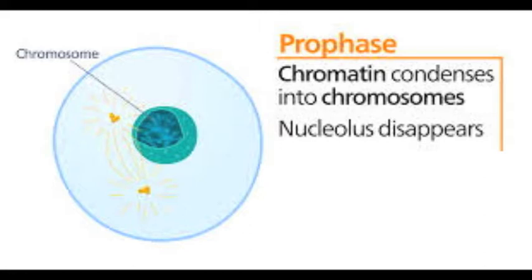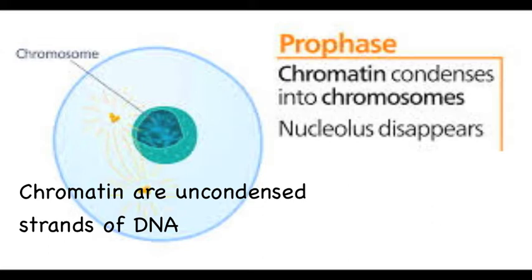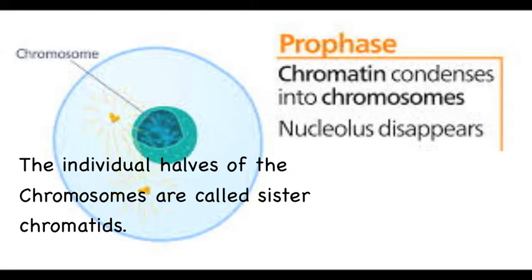First is prophase, which takes up about 75% of the mitotic phase. Here chromatin begins to condense into chromosomes. Since DNA replication transpired in the S phase of interphase, the replicated DNA joined together at the centromere. Also, the nuclear envelope begins to disappear and the centrosomes begin to travel to each pole of the cell, and spindle fibers made out of microtubules start to form.